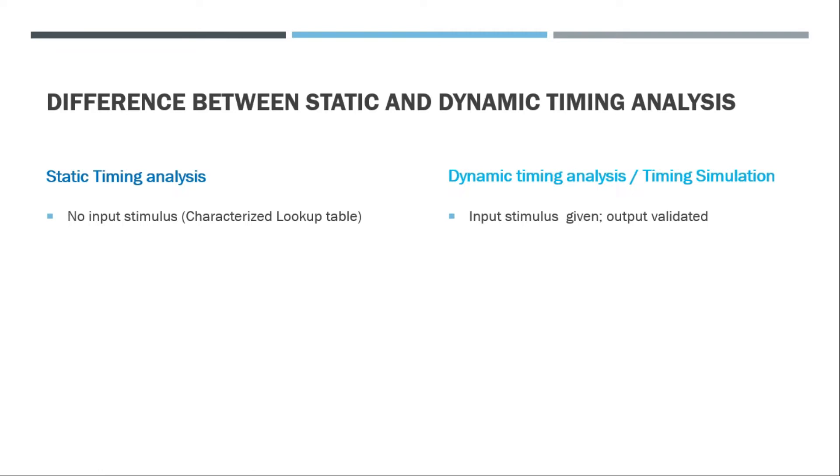The second difference is that static timing analysis unfortunately cannot validate the functionality of the design. It can only deal with the timing analysis but cannot validate the functionality of the design. But dynamic timing analysis validates the functionality as well.